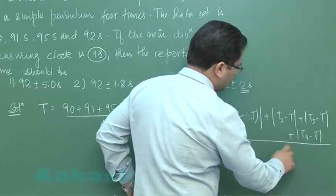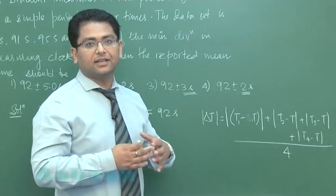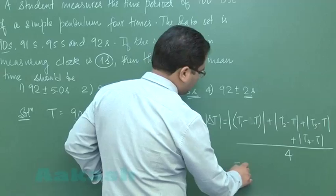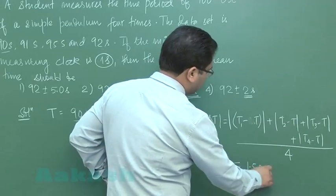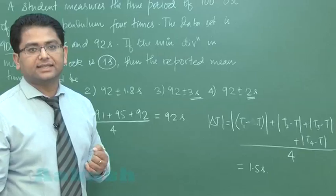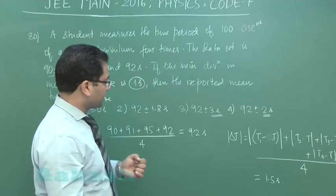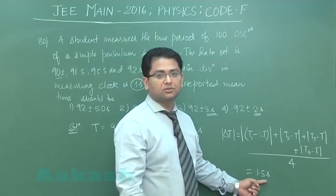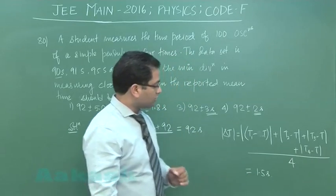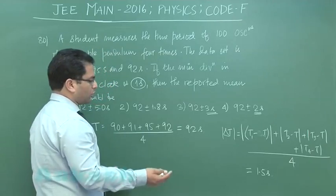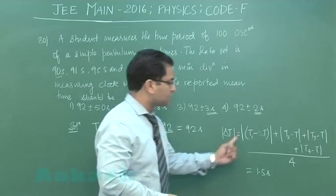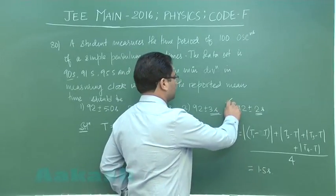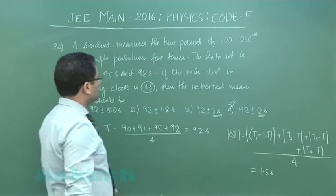This value on calculation would be 1.5 seconds. But we know our device has a least count of one second. In that situation, 1.5 seconds is not the way we're going to represent it. We have to round it off, and on rounding, it would go to 2 seconds. That would eventually lead to option number four.